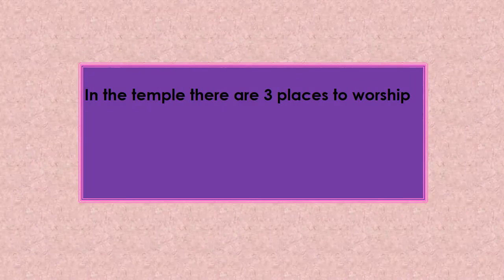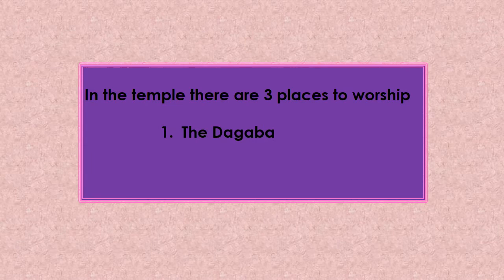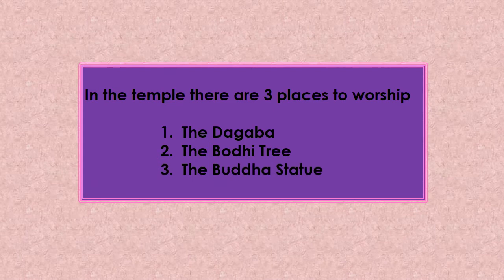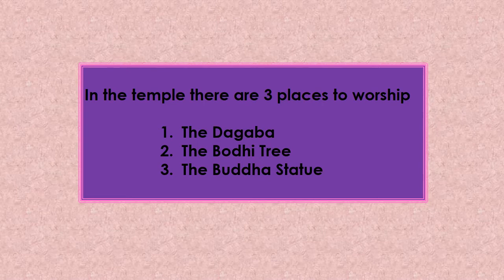Children, in the temple there are three places to worship. According to the order: first, the Dagabba; second, the Bodhi tree; third, the Buddha statue.